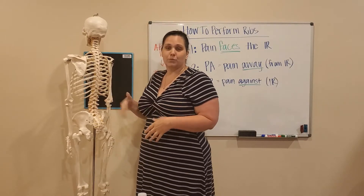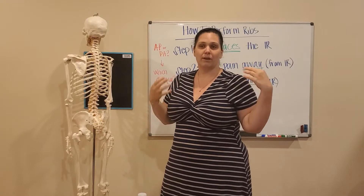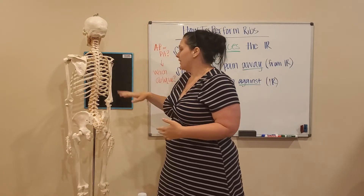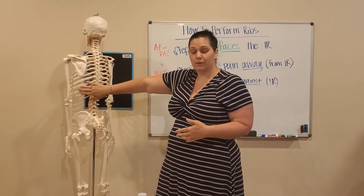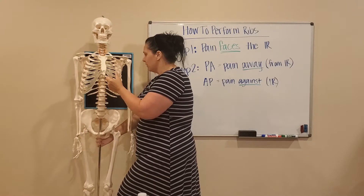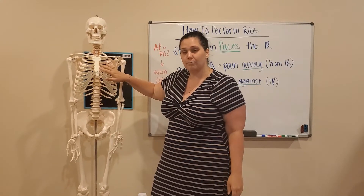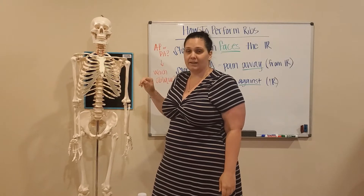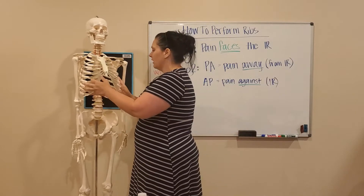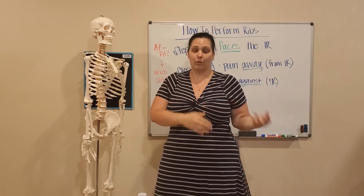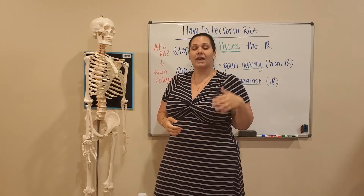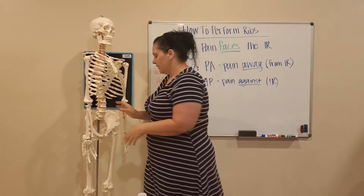For left anterior pain, you would put your patient into an RAO position because the left side of the patient would be away from the IR. So RAO and PA is what you would do. As another example, for left posterior pain: step one — face the patient toward the image receptor, which tells me I'm doing AP. Then for the oblique, AP pain against — put that left side down and do an LPO. So for left posterior pain, the two projections are AP and LPO.